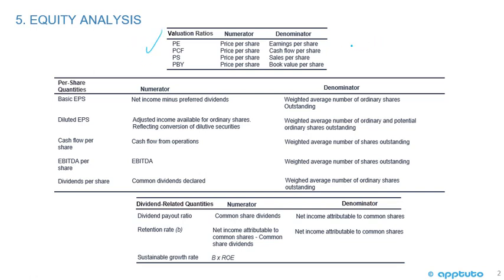Price to earnings: the numerator is always the price per share, and the denominator is always on a per share basis. So PE is price to earnings per share. P/CF is cash flow per share. P/S is sales per share. And P/BV is book value per share.